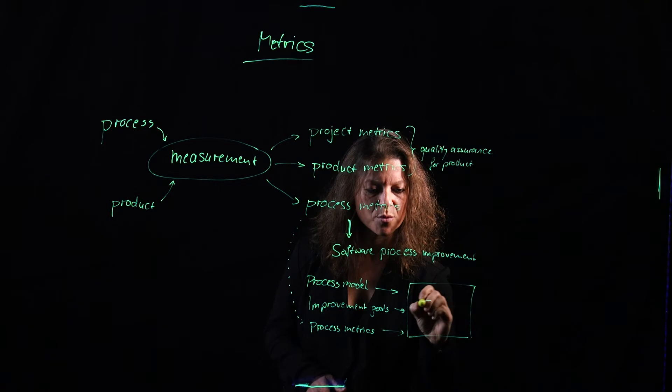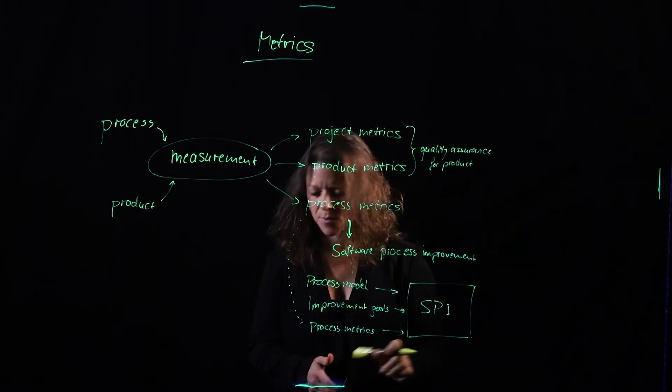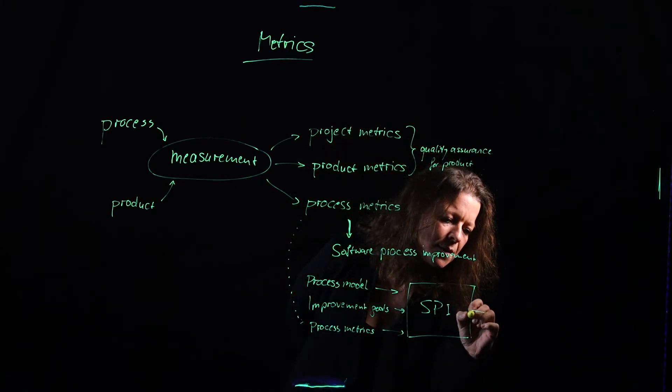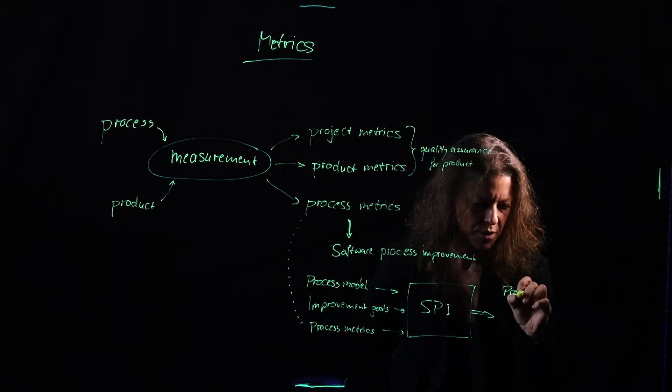And how can I potentially improve that? Software process improvement, short SPI. That's what we get. And what comes out of here is process improvement recommendations.